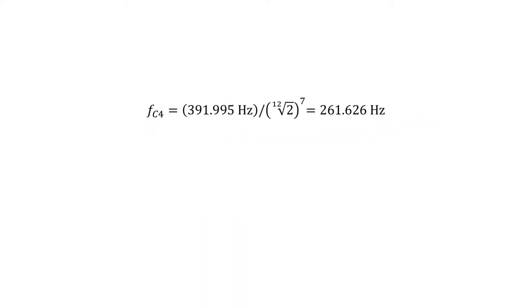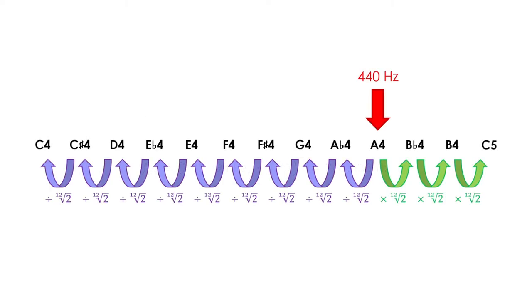To calculate lower note frequencies, we have to perform a division. For example, if we have the frequency of G4 and we want to find C4, we would have to divide by the 12th root of 2 seven times. That is, divide by the 12th root of 2 to the power of 7. An alternative way of expressing this operation is to multiply by the 12th root of 2 to the power of minus 7. This is because dividing by a number raised to a power is the same as multiplying by a number to that same power but negative.